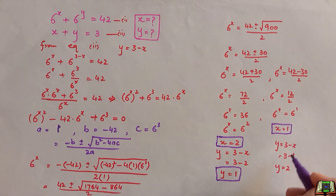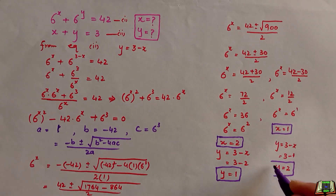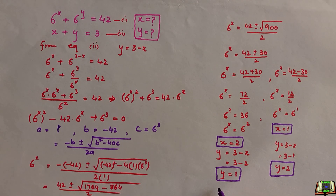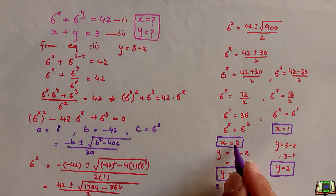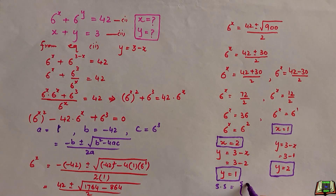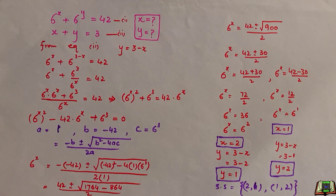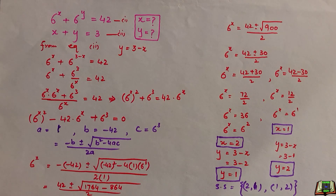So we have two solutions: if x equals 2, then y equals 1; and if x equals 1, then y equals 2. The solution set is {(2, 1), (1, 2)}. I hope it is clear. Don't forget to hit the like button if you like the solution, subscribe to this channel for more informative content. Thanks for watching.